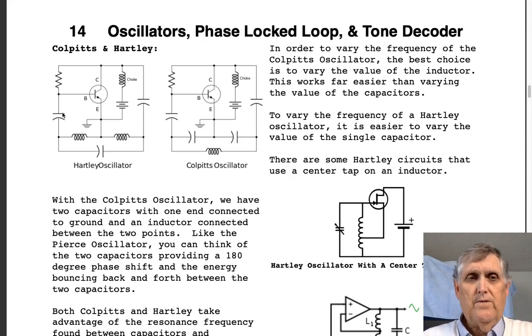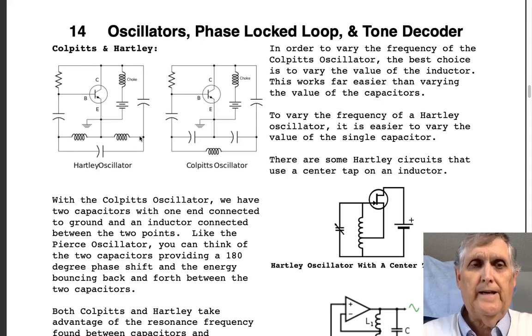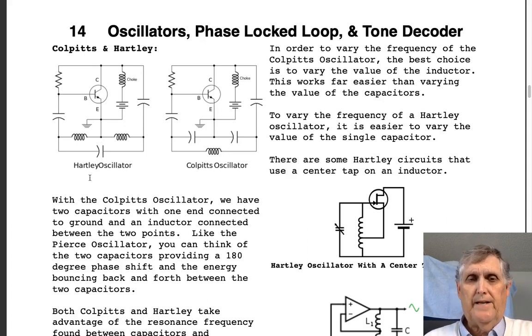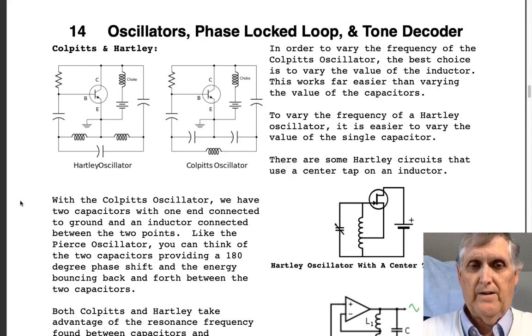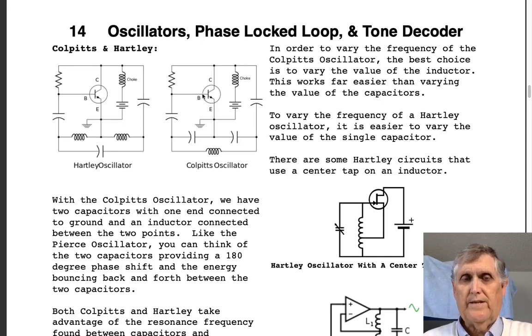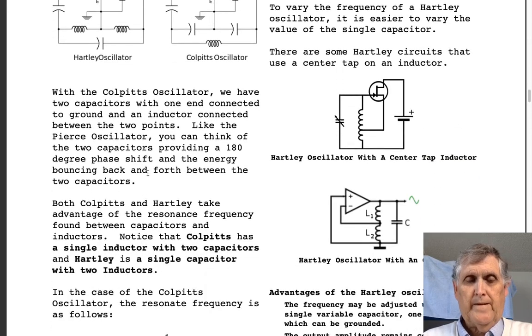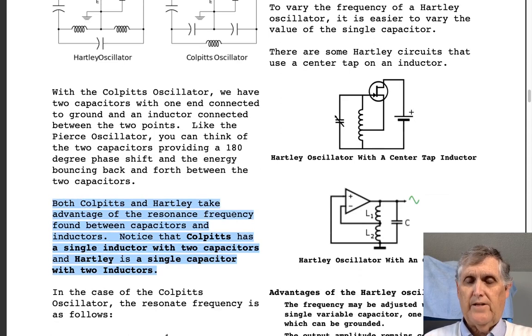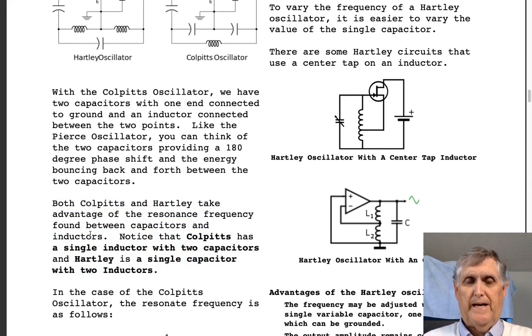The idea here is you want something that is sending energy from this point to this point to this point. That's the whole idea of these oscillators. These capacitors, two capacitors or two inductors in the case of the Colpitts, create a 180-degree phase shift, and the transistor itself acts as 180 degrees. So between this 180 degrees and these guys doing 180 degrees, you've got a full 360 and positive feedback. Both of these take advantage of the resonant frequency found between capacitors and inductors.